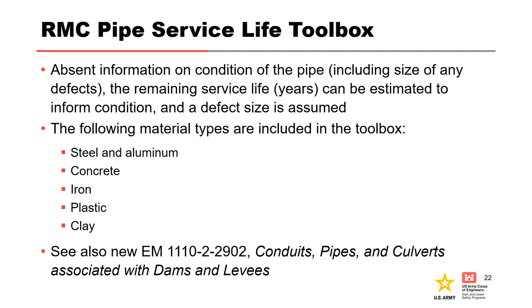If you don't have information from a recent inspection, the RMC Pipe Service Life Flaw Toolbox can be used to evaluate pipes with respect to having a defect such as a perforation, serious degradation, etc., that can help assess internal migration through a defect. This tool should only be used when the existing condition of the pipe is not known from a recent inspection within the last five years or so, particularly with respect to the culvert's invert. There is also additional information in the new EM 1110-2-2902 Conduits, Pipes, and Culverts associated with dams and levees.